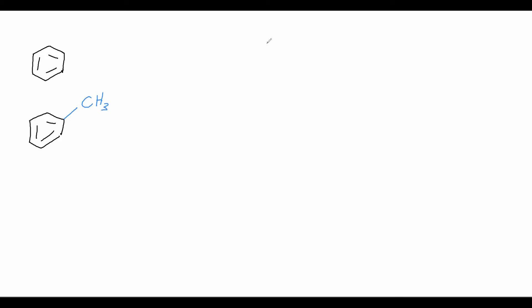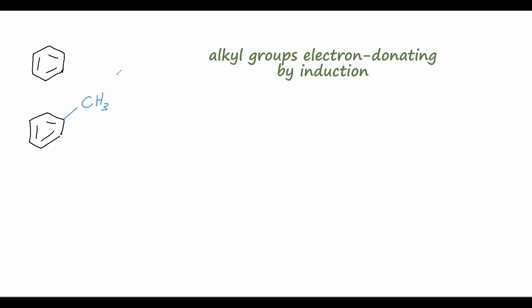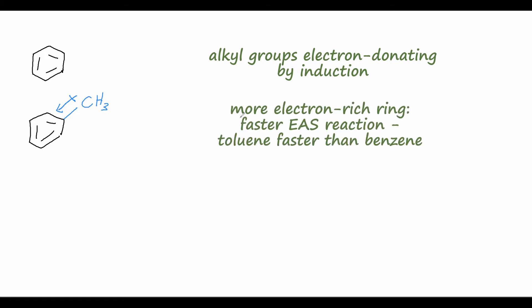To answer that, we can remember that alkyl groups are electron donating via induction or hyperconjugation. What that means is we can draw a dipole moment where the methyl group is donating some additional electron density into the benzene ring. Remember, these reactions are called electrophilic aromatic substitutions because the aromatic ring is reacting with an electrophile — a species with excess positive charge looking for extra electrons. Because of that, the more electron density in the ring, the faster this reaction will occur. So toluene will react faster in an EAS mechanism than benzene.